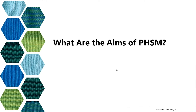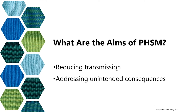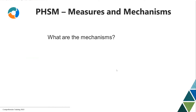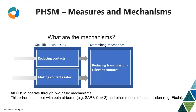Moving back to the concept of PHSM and the core of this presentation: what are the aims of PHSM? They are twofold. PHSM serve to reduce transmission, but we also need to think of PHSM as addressing the unintended consequences of measures to reduce transmission. We postulate that all PHSM operate through two basic mechanisms. The first mechanism is to reduce contacts — reducing contacts between numbers of people. The second mechanism is about making contacts safer — those contacts that still occur, occurring in a relatively safe manner. Combining these two mechanisms serves to reduce transmission-relevant contacts.